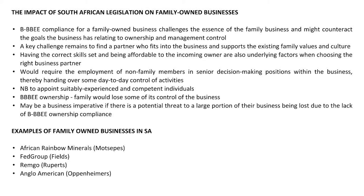If a company doesn't achieve a minimum level of ownership, it will automatically drop a BEE level. There are customers who will only do business with suppliers who have a certain level of BEE compliance, so there may be a strong business imperative to bringing in those BEE partners. Some examples of family-owned businesses in South Africa: African Rainbow Minerals, amongst many other companies, owned by the Motsepe family; Fed Group owned by the Field family; Remgro, owned infamously by the Ruperts — Johan Rupert, now well known after substantial donations to the COVID relief funds. And then the Oppenheimer family, who until a few years ago owned large stakes in Anglo-American and its subsidiary entities.